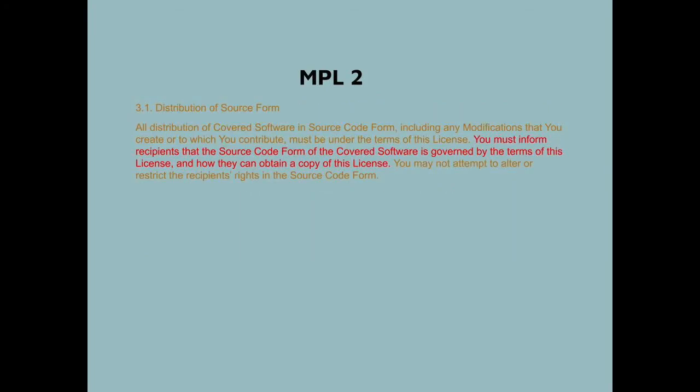The Mozilla Public License 2.0 has a lightweight notice requirement. You don't necessarily have to include a copy of the entire license in every distribution. As you can see here, it says you must inform recipients that the source code form of the covered software is governed by the terms of this license and how they can obtain a copy of this license. That means you can do your notices by reference for this particular license.